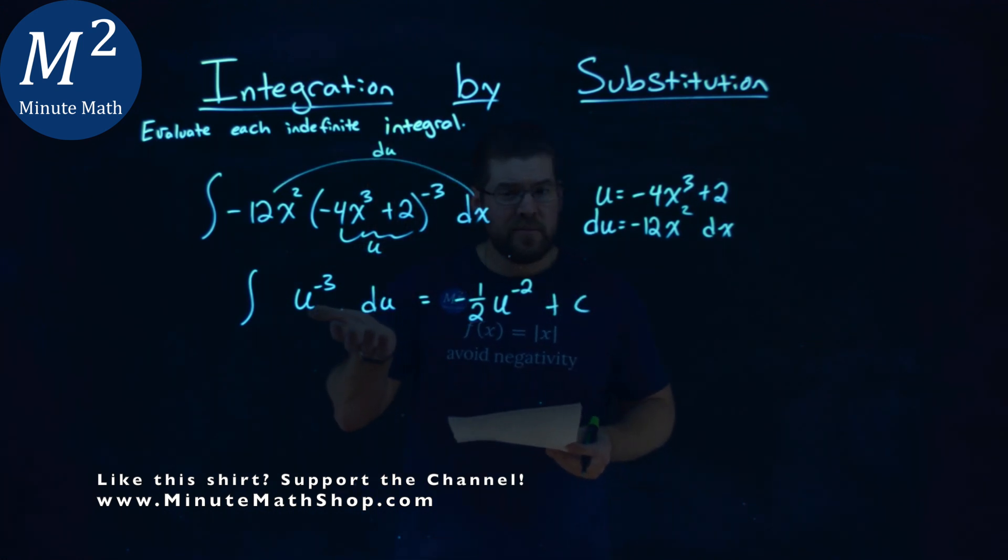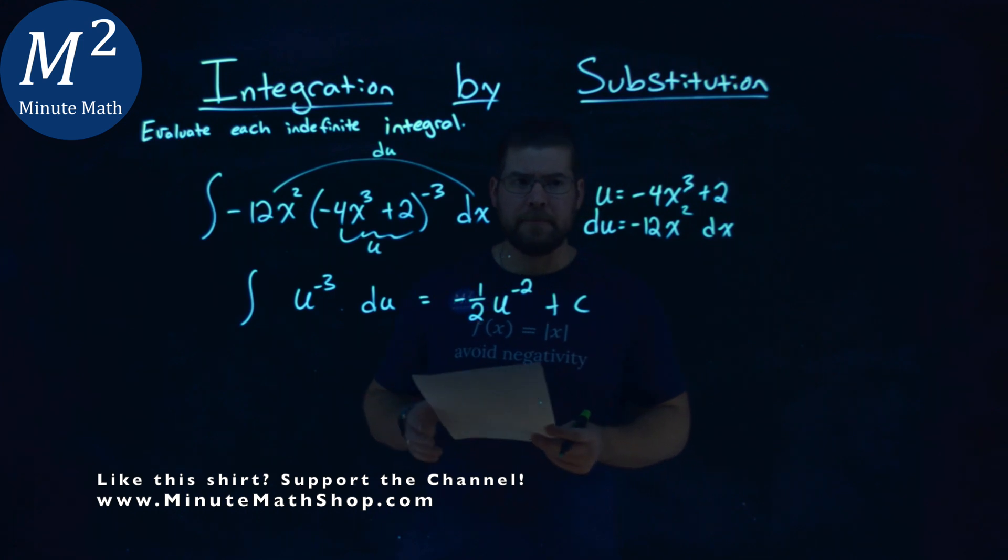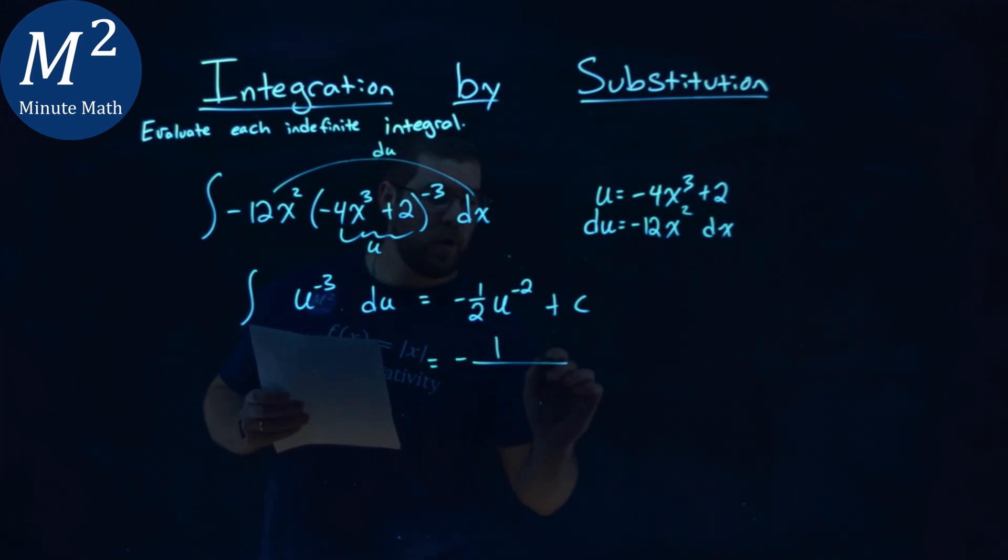At this point, we can just plug our u value back in. We have negative 1 over 2, and I'm going to put whatever that u value is to a positive 2 power in the denominator. Our u is negative 4x³ plus 2.